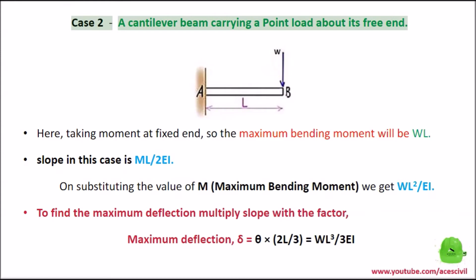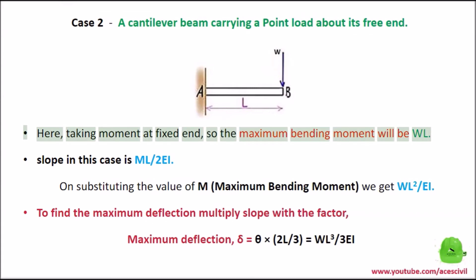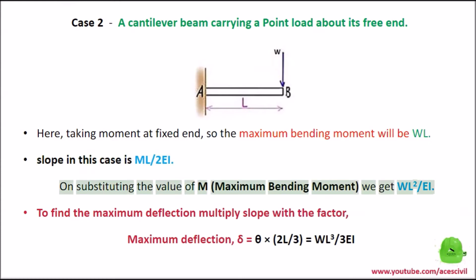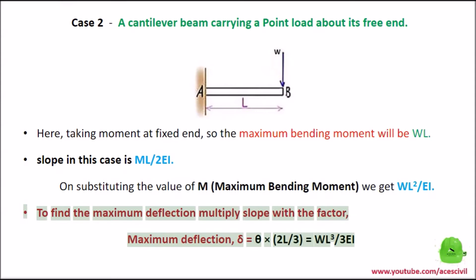Case 2: A cantilever beam carrying a point load at its free end. Taking moment at the fixed end, the maximum bending moment will be WL. Slope in this case is ML / 2EI. On substituting the value of M (maximum bending moment, WL), we get WL² / 2EI. To find the maximum deflection, multiply slope with the factor: maximum deflection D = θ × (2L / 3) = WL³ / 3EI.